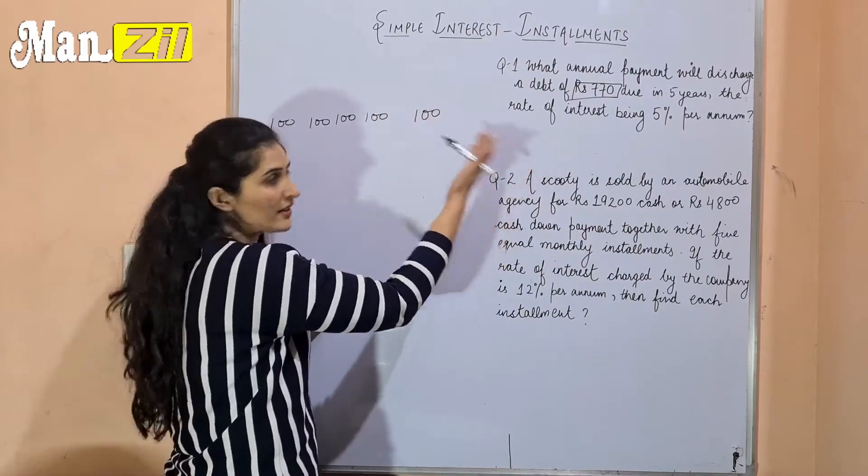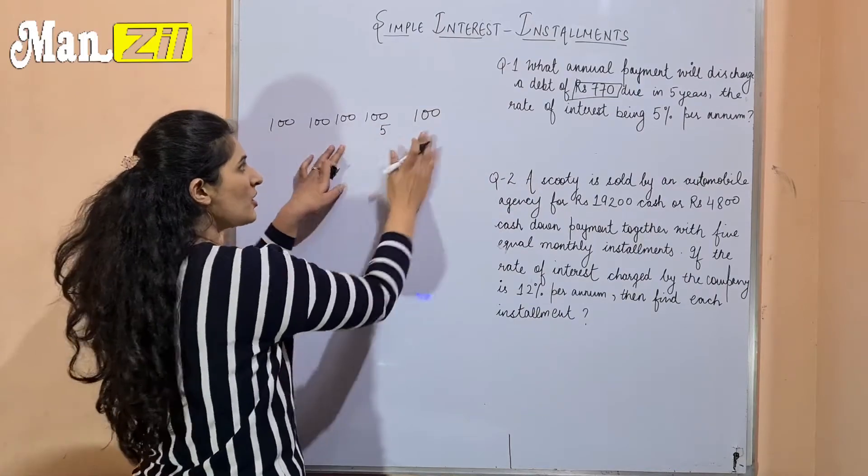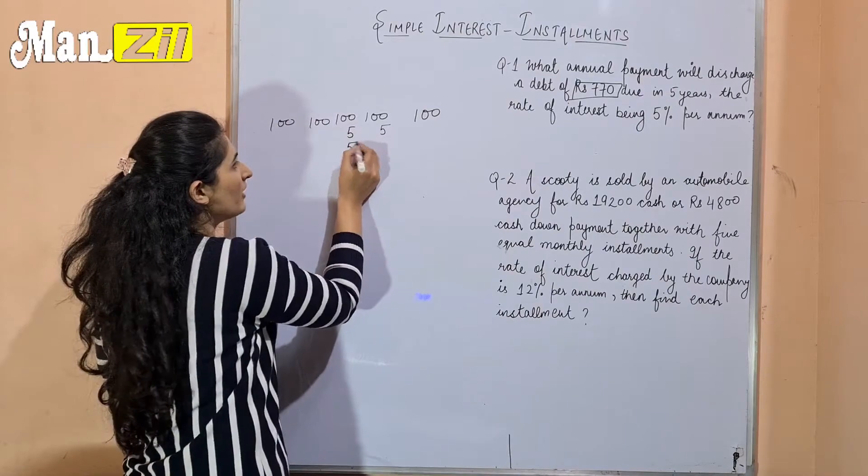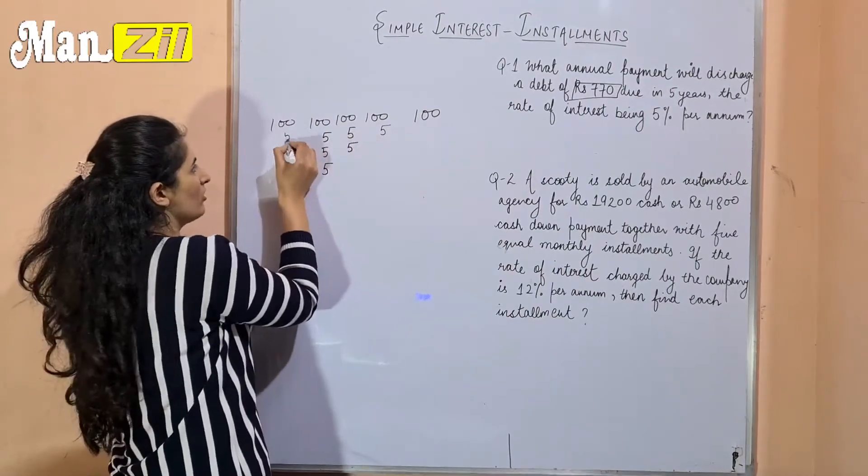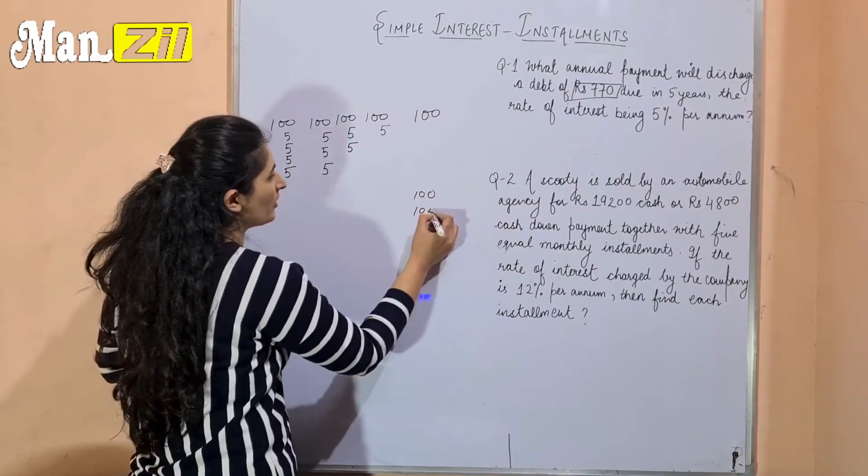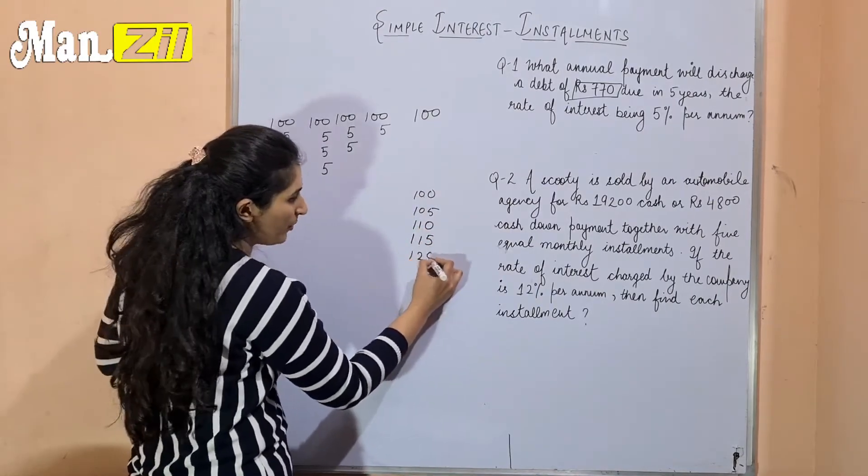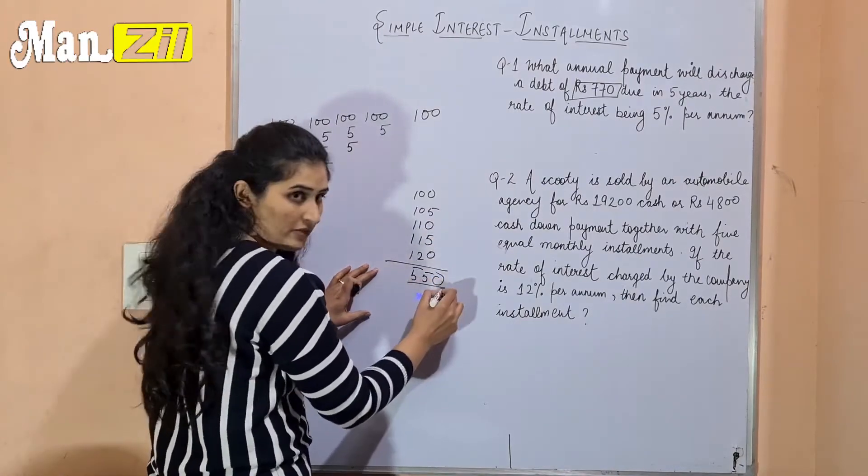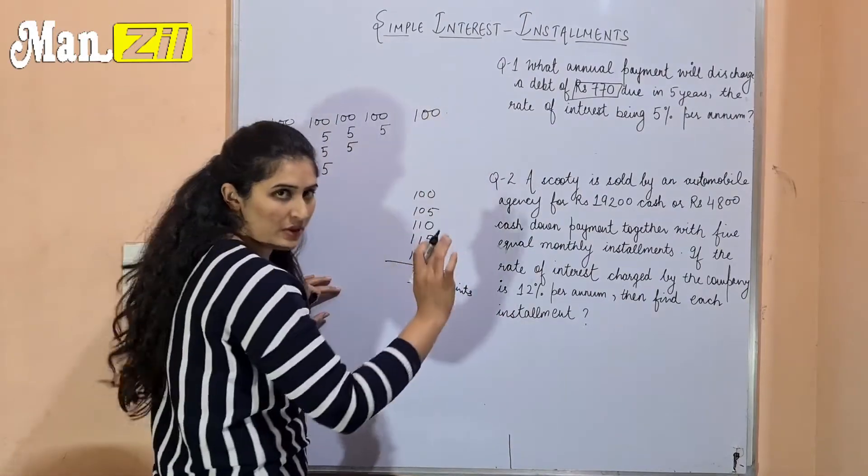Next year it will add 5% per annum, so it will add 5. In the third year, it will add 5 in the first year and second year, that means 5 and 5, and so on for 5 years. So this will be 100, 105, 110, 115, and 120. Now we will total it, this will be 550 units because we have assumed that our first installment was 100 units.